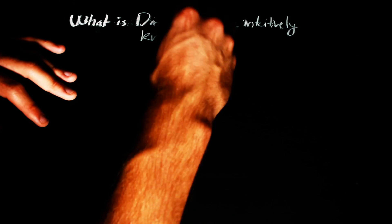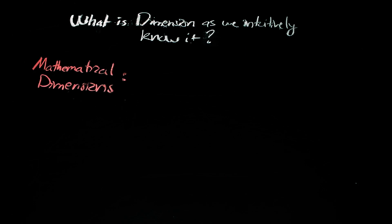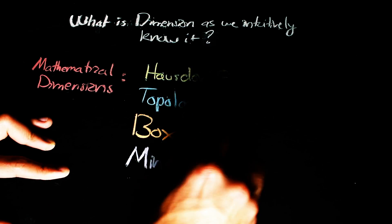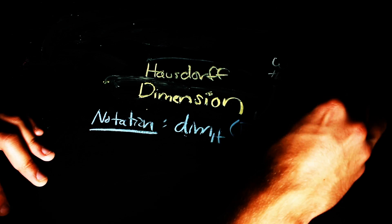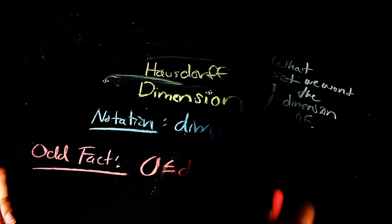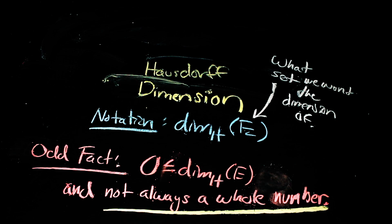Mathematicians would be careful and specify what kind of dimension we were talking about, but it just so happens that this intuitive version of dimension falls in line with what is called the Hausdorff dimension of a set. However, the Hausdorff dimension of a set is a bit more general, and can be any number greater than or equal to zero, which is a bit mind-boggling.